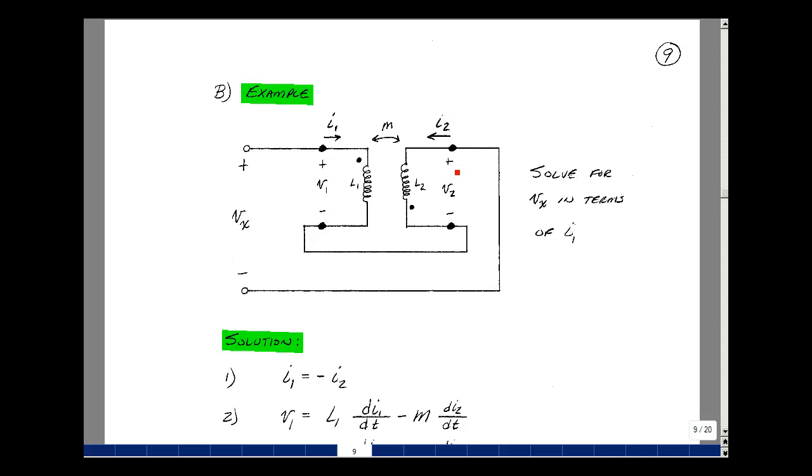I'll call this one V1 and V2, and since the plus sign is by this dot and the minus sign is by this dot, our value of M is going to be negative.